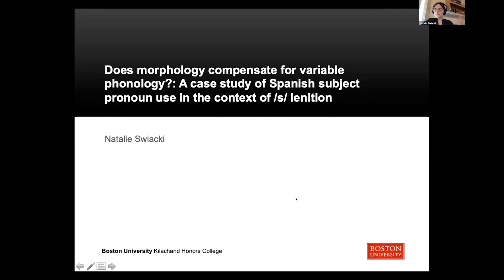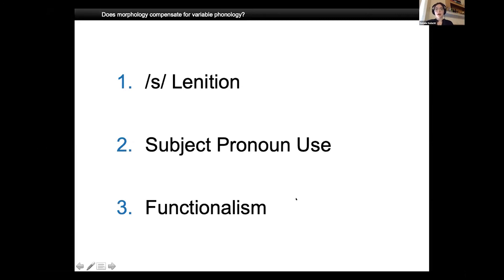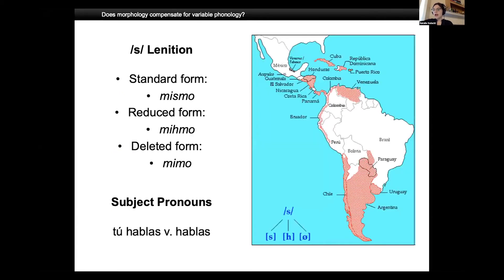I'm going to begin by breaking down three important concepts for you. Those are s-lenition, Spanish subject pronoun use, and functionalism. First, s-lenition refers to the reduction of the sound S to something that sounds more like an H or nothing at all. In other words, the sound can be completely deleted. For example, the word mismo can be pronounced just as I did, with a strong S sound, mismo, but can also be pronounced more like mihmo or mimo, with the reduced and deleted forms respectively.